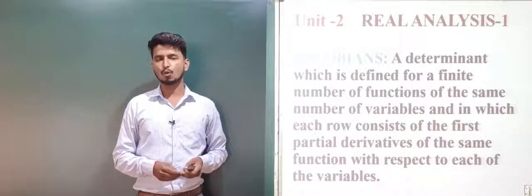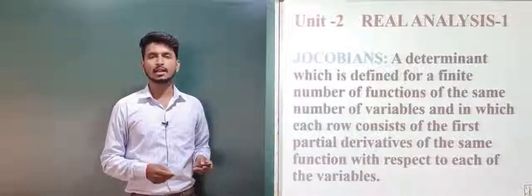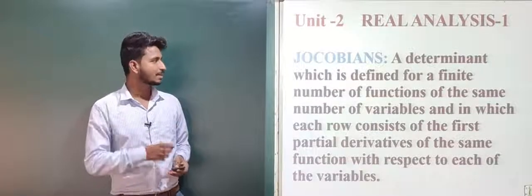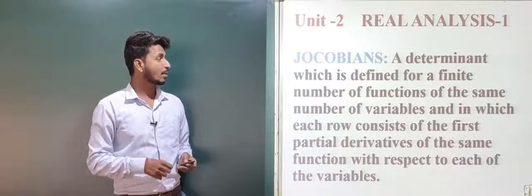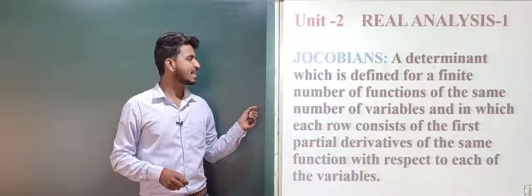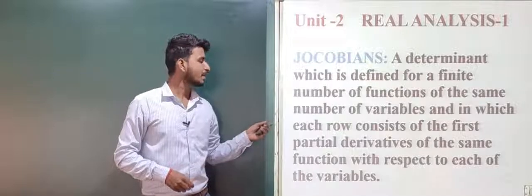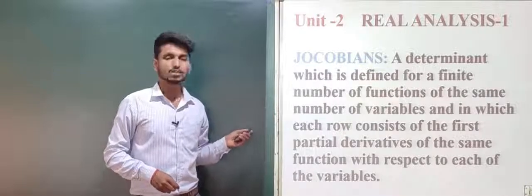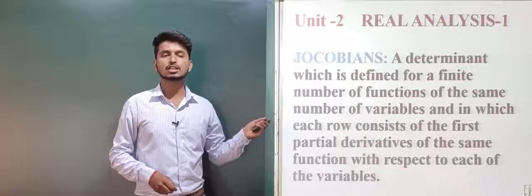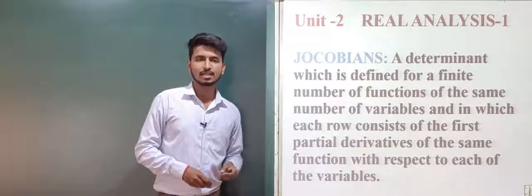First we will study about the Jacobians and properties of Jacobians. The Jacobian is a determinant defined for a finite number of functions of the same number of variables, in which each row consists of the first partial derivatives of the same function with respect to each of the variables.